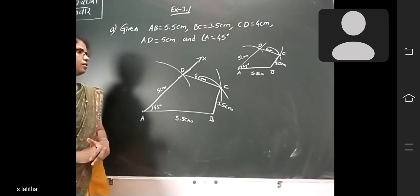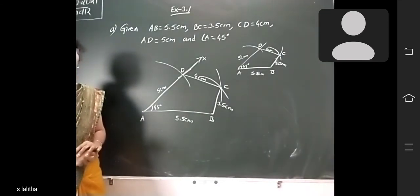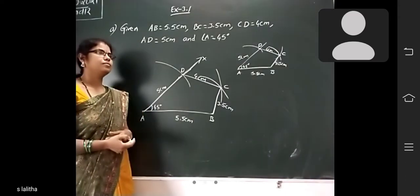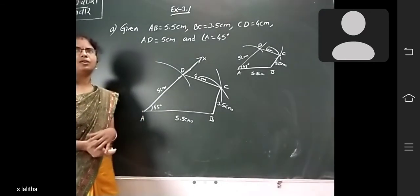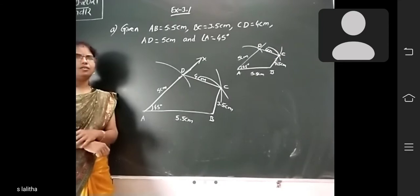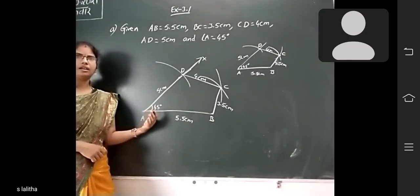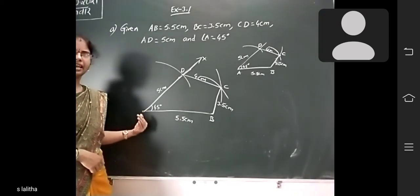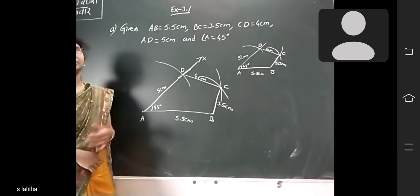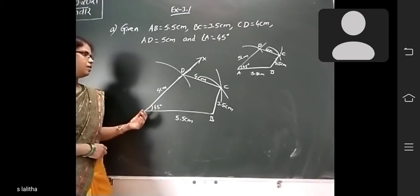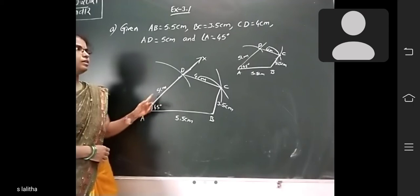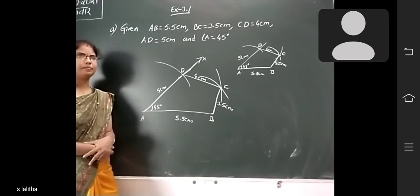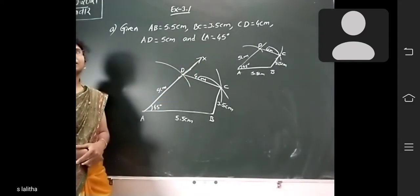Step 5: with center A, draw an arc with radius 5 cm. The ray AX and this arc will be intersecting — coincide or intersecting. The ray AX and the arc intersecting at point D.